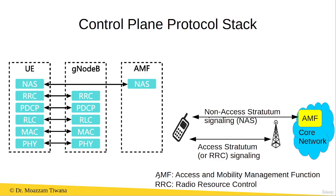Now, AMF stands for Access and Mobility Management Function. This direct signaling link between the AMF in the core network and the user equipment is called non-access stratum signaling, also abbreviated as NAS signaling.